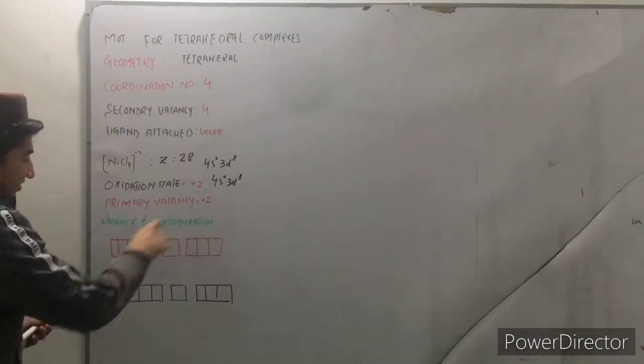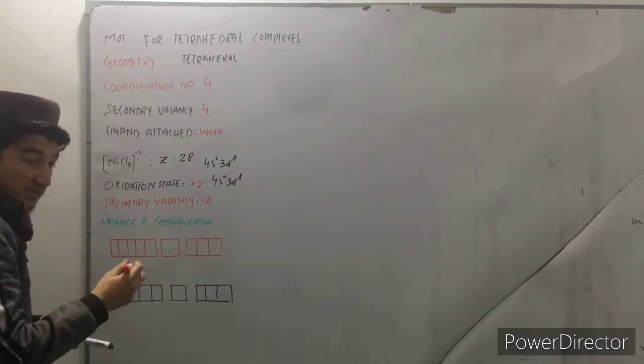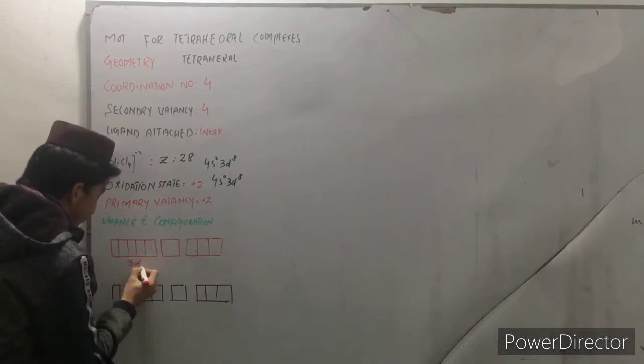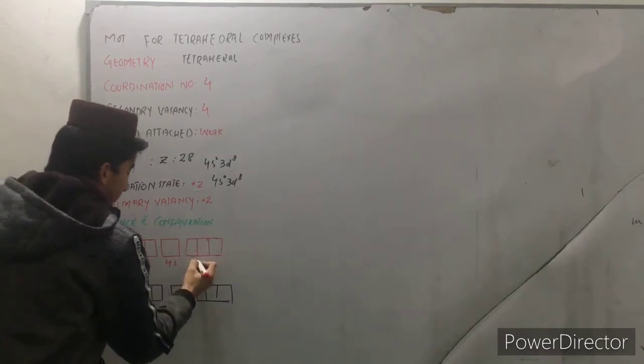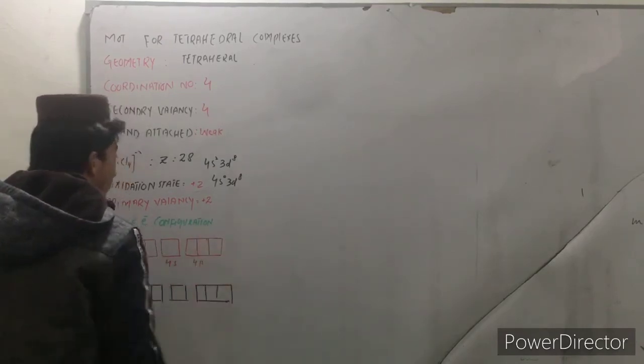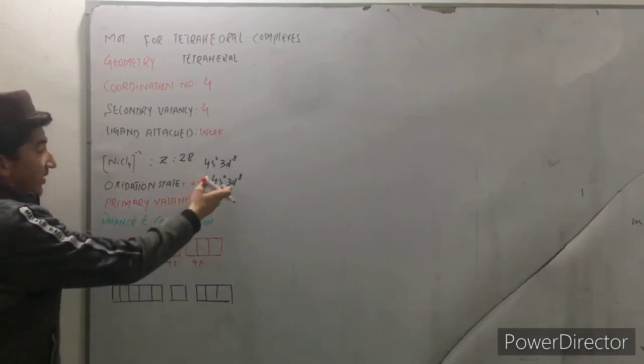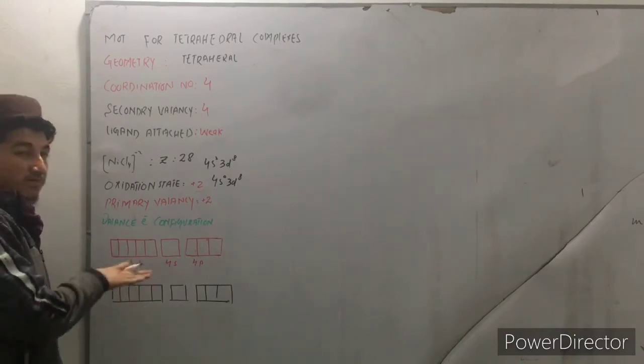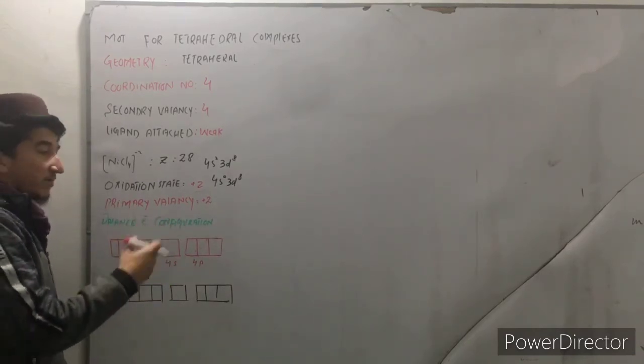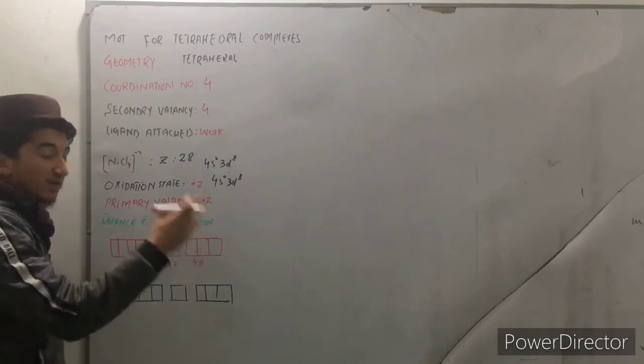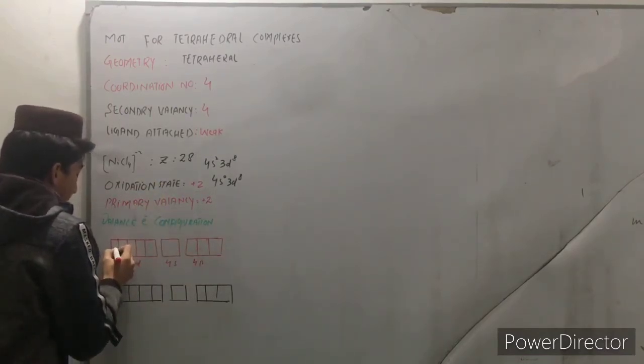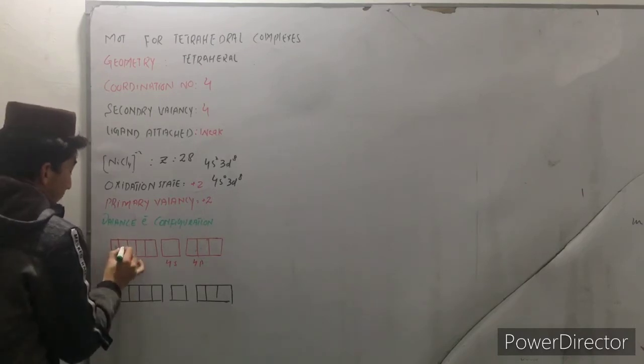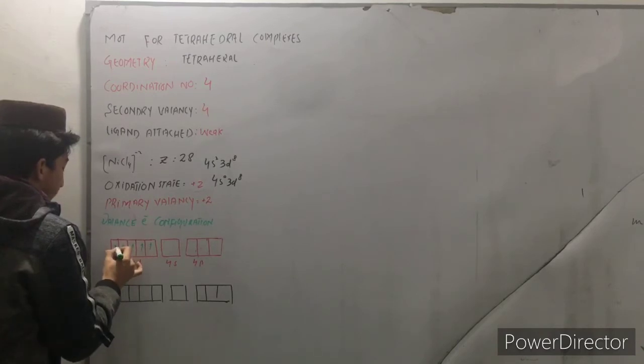Now let us fill these orbitals sub shells. This is 3d, this is 4s and this is 4p. Now you can see the 3d has 8 electrons. This will be filled in case of degenerate orbitals. You might have studied about the rules of filling of subshell orbitals. It will be filled just like 1, 2, 3, 4, 5, 6, 7, 8.